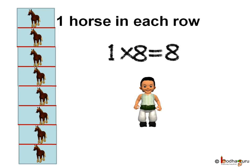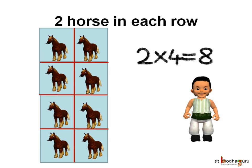First he arranged 1 horse in each row. So the number of rows are 8, and total number of horses is 1 times 8, that is 8. Next he arranged 2 horses in each row. Number of rows is 4, so the number of horses is equal to 2 times 4, which is 8.